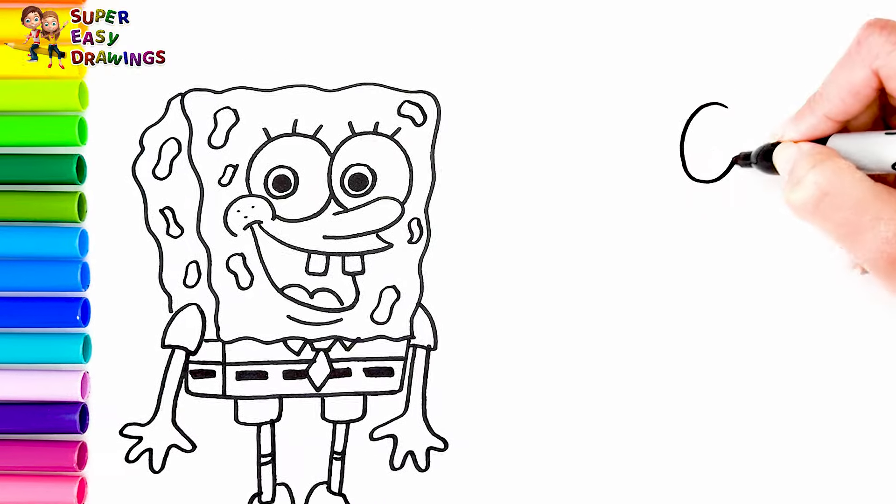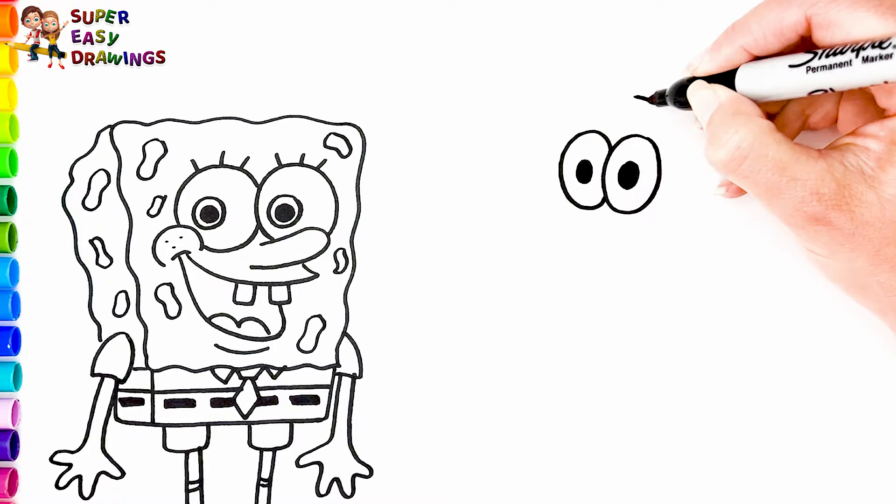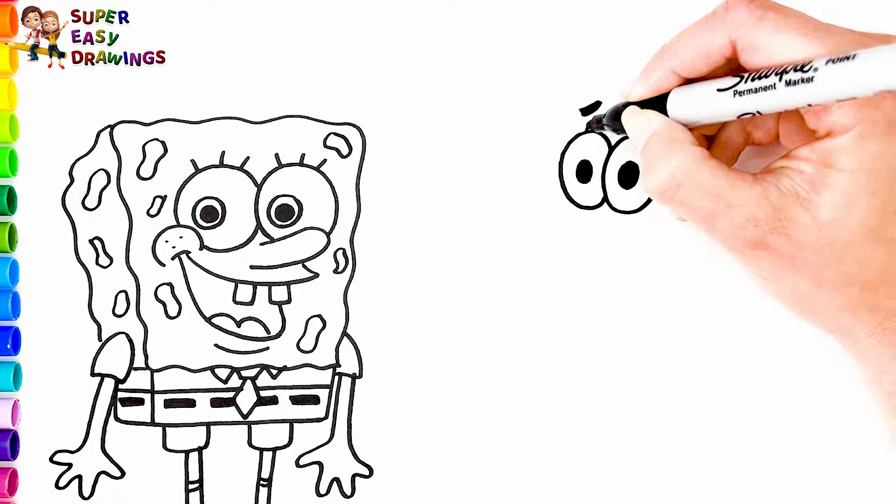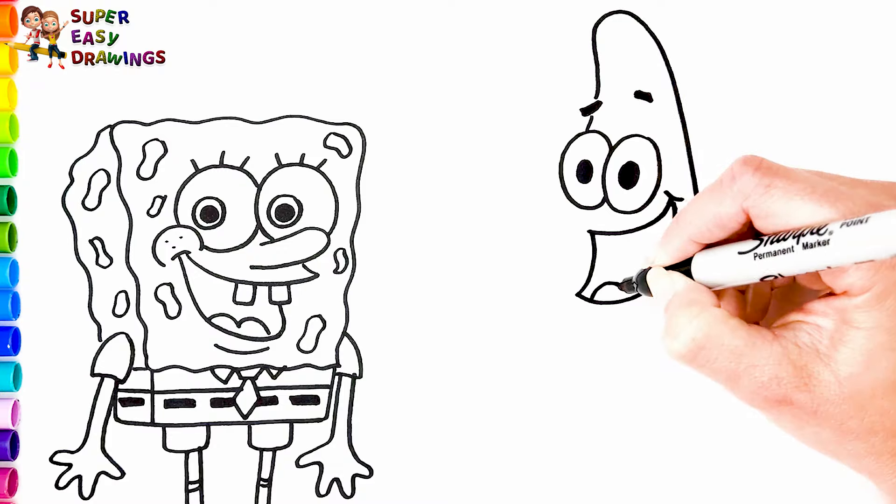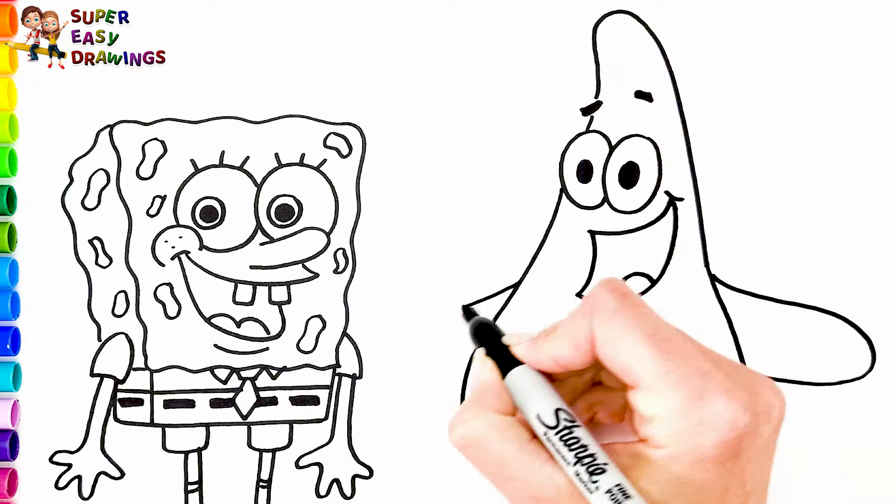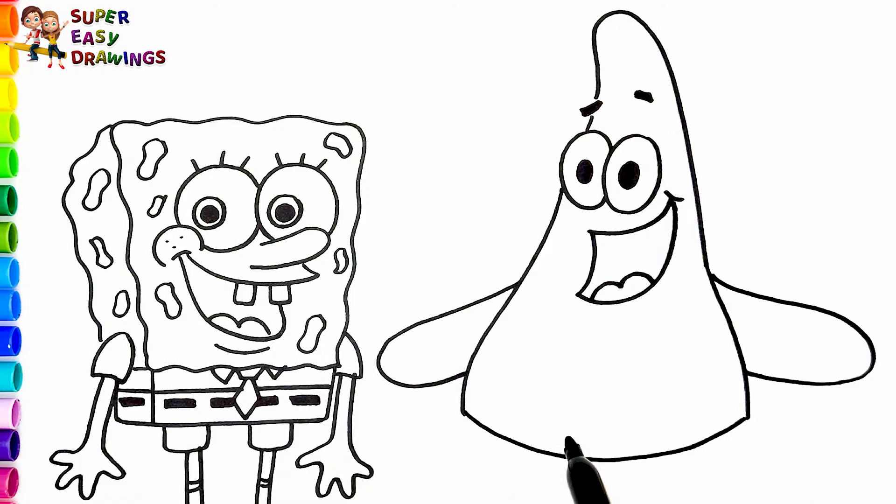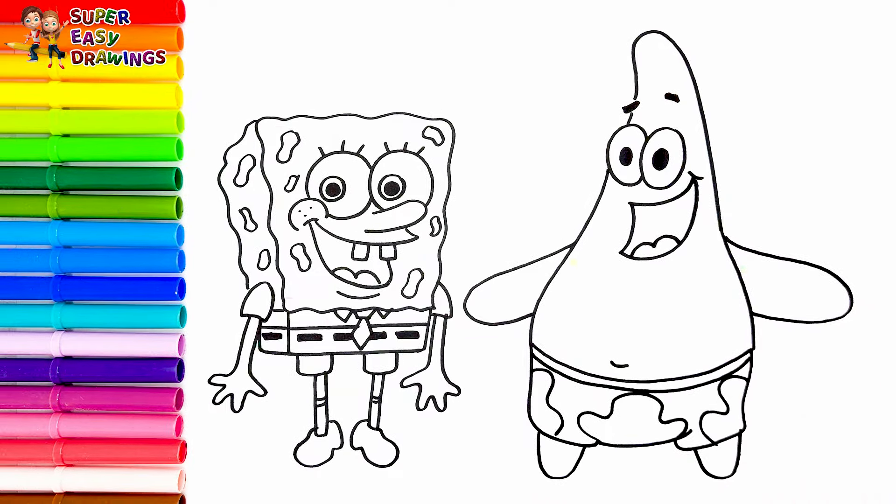Next to him, let's draw Patrick Star. I draw his eyes, eyebrows, then I draw the shape of his head and his shoulders and his smiling mouth. He is Spongebob's best friend and one of his two neighbors. I draw his pants and legs. I love it!